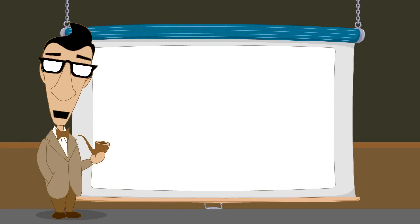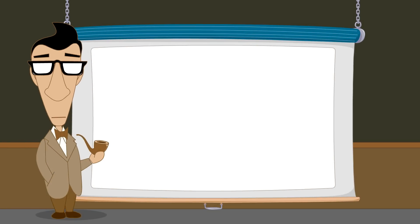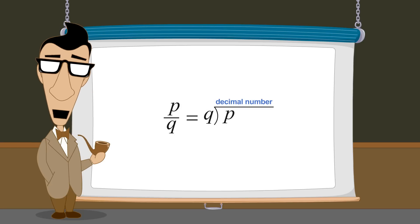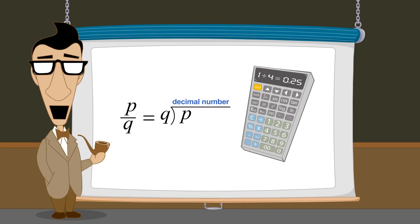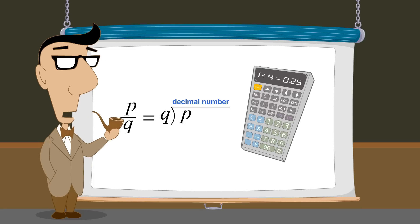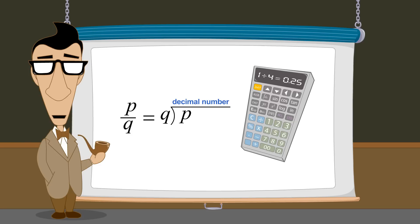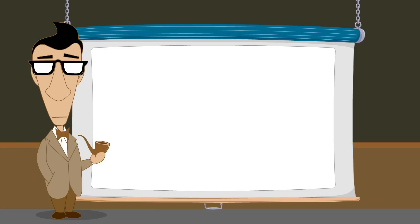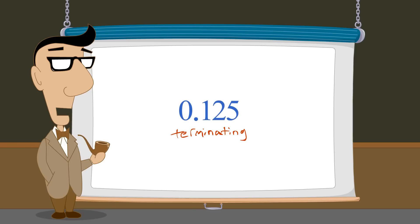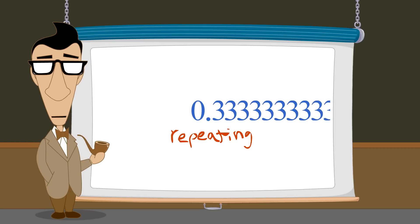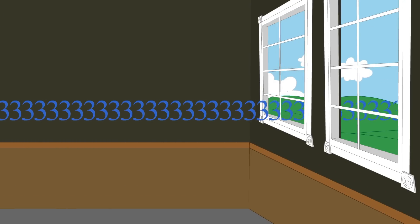Any fraction can be converted to a decimal number by simply dividing the numerator by the denominator. We can do this using long division or with a calculator. The result of this division will be a decimal number which is equivalent to the fraction. This decimal number will either repeat or terminate. A terminating decimal number has a finite number of digits after the decimal point. A repeating decimal number has a sequence of digits after the decimal point which repeats forever.